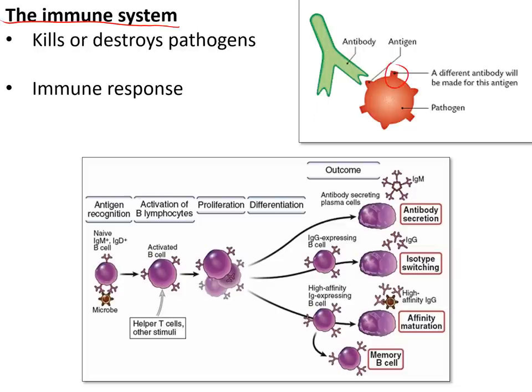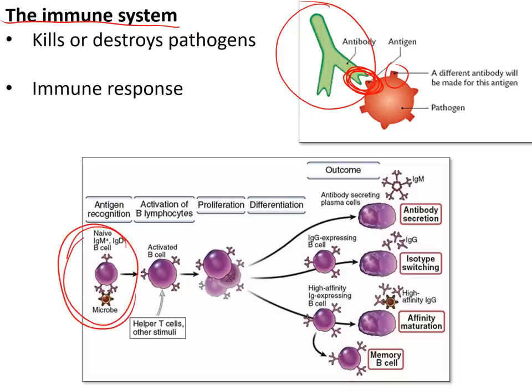The immune system destroys pathogens that enter the body. It works based on chemicals called antigens found on the surface of a pathogen — chemical markers that identify them. We make proteins called antibodies that stick to antigens and kill the pathogen. Each antibody has a shape to match a specific antigen. Antibodies are made by lymphocytes — when first infected, the one lymphocyte with the right antibody shape becomes activated.